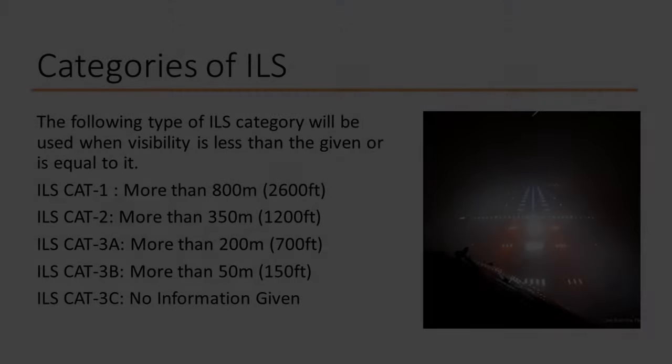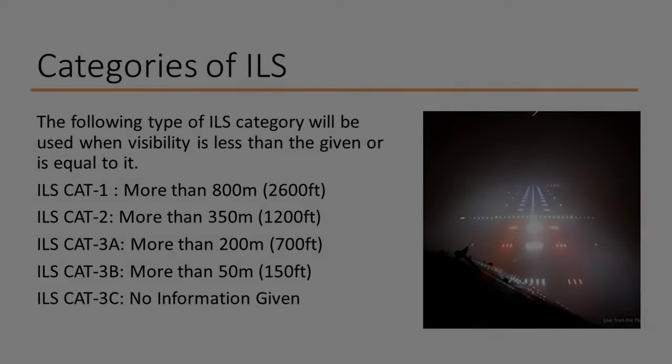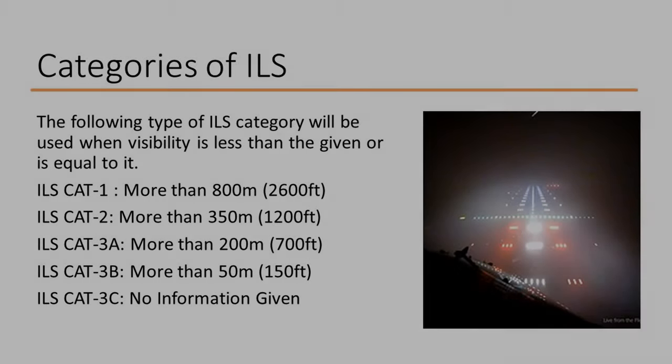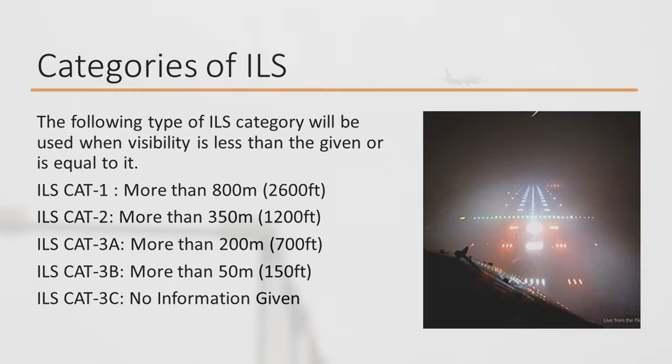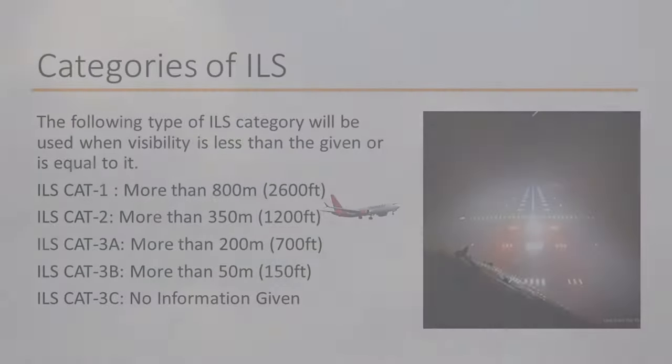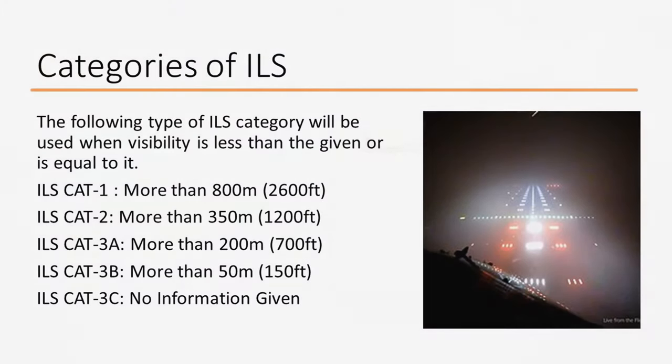The basic function of the ILS is to guide an aircraft in rough weather conditions. There are various categories of ILS that work in different weather conditions — mainly three types. CAT 1 works when visibility is more than 800 m. CAT 2 allows approach when visibility is more than 350 m. CAT 3A allows an aircraft to approach when visibility is more than 200 m.